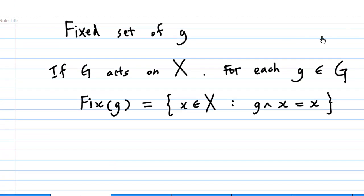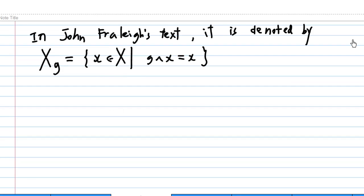What is a fixed set of G? If a group G acts on a set X, then for each element g of the group G, Fix(g) is all the elements x in the set X such that g·x equals x. This expression looks very similar to the stabilizer, but we are looking for elements in the set X now. In John Fraleigh's text, it is denoted by X sub g.